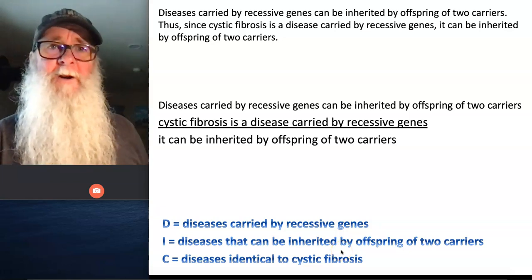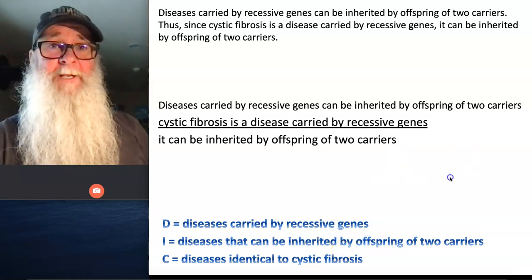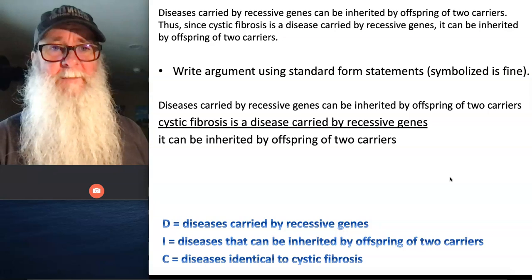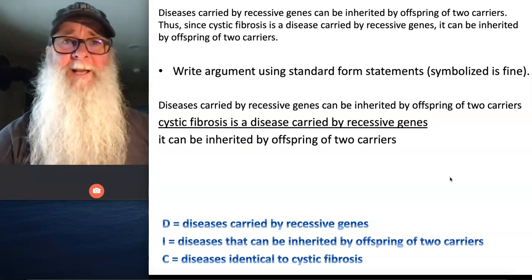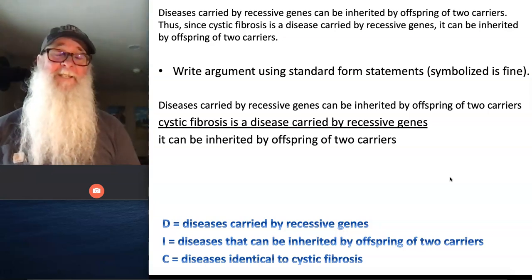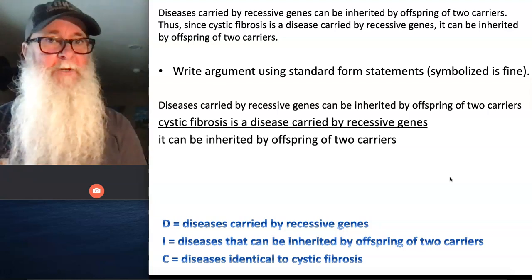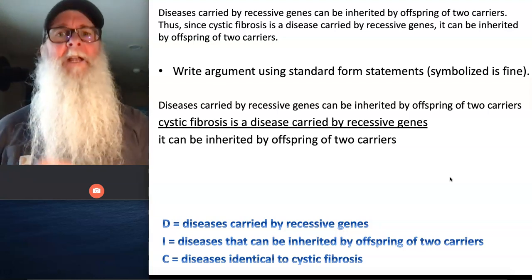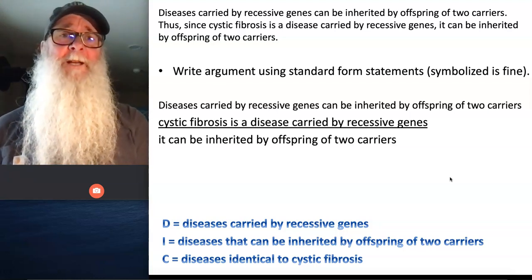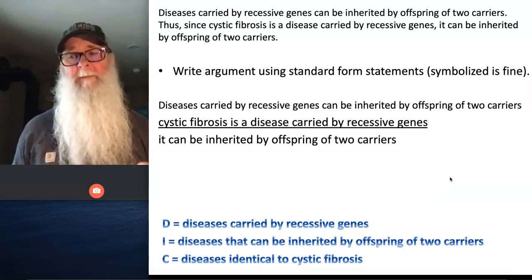Now that we have all of the terms of our argument identified, we can move on to step three. Step three is: write the argument using standard form categorical statements. Symbolized is fine.